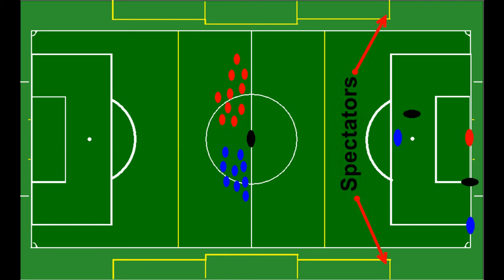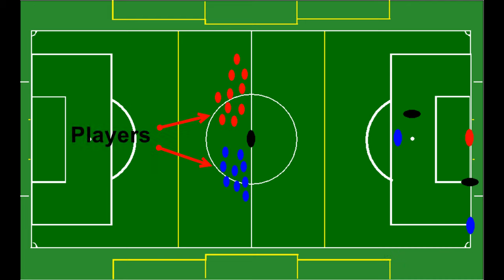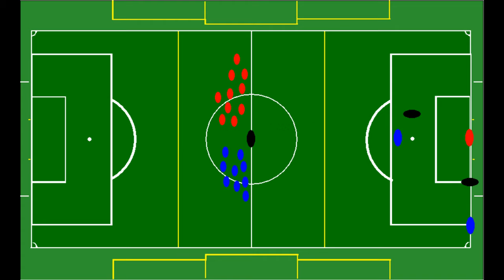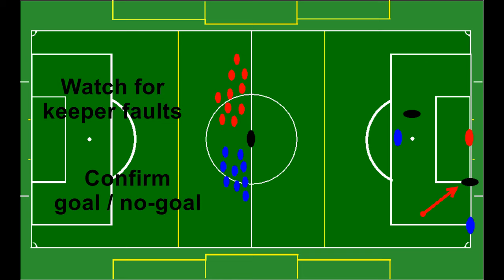Spectators should be no further down the touch line than the top of the penalty area. If somebody wants to film the kicks, they can set up a remote camera ahead of time and then join the spectators up the touch line. Players should be gathered at the center circle. The non-active keeper should be at the edge of the penalty area. The first AR stays at the center circle and manages the players. He or she should know which players have kicked and record the score. The second AR should line up where the goal area meets the goal line. His or her main job is to determine if the keeper commits a fault and to confirm the ball crosses the goal line.